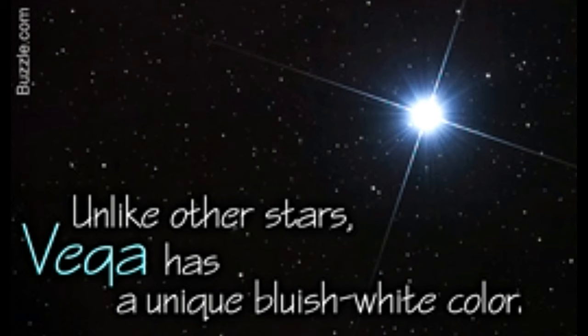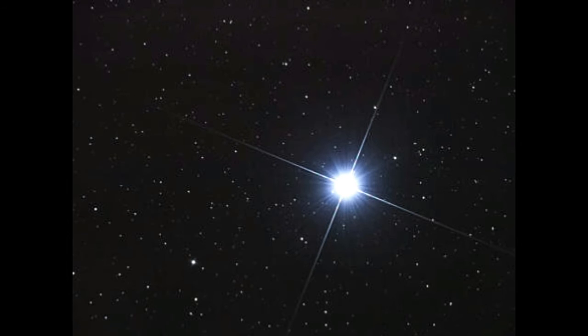The distance between Vega and the Earth is 25 light years. Vega has a bluish white color, which distinguishes it from other stars.